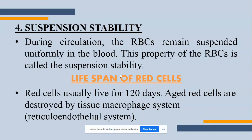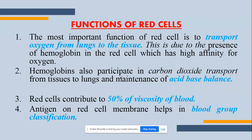Now we will see the lifespan of RBCs. As discussed in the previous video on blood indices and hemoglobin, the lifespan of RBCs is 120 days. Their destruction takes place in the reticular endothelial system, specifically the spleen.